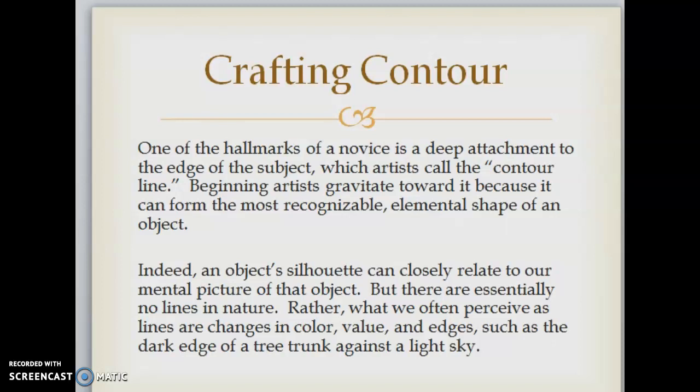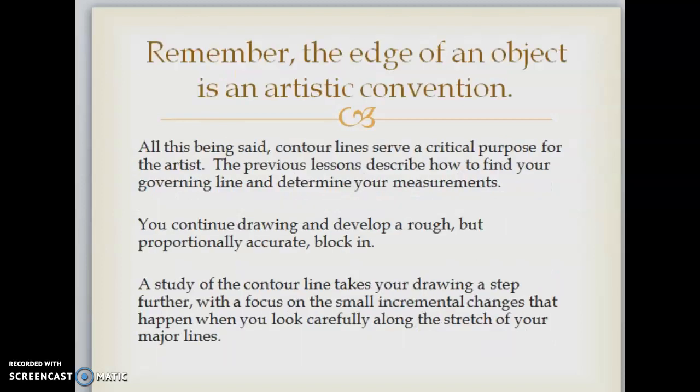Indeed, an object's silhouette can closely relate to our mental picture of that object, but there are essentially no lines in nature. Rather, what we often perceive as lines are changes in color, value, and edges — such as the dark edge of a tree chunk against a light sky.